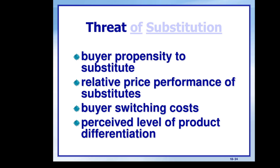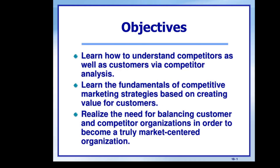The last force is threat of substitution. If you increase the price, people will go for a substitute product already available in the market. You should consider perceived level of product differentiation and identify how many substitute products are in the market, then plan accordingly. With this, the third unit concludes. Blue ocean strategy is your assignment — two topics that will be discussed in tomorrow's class.